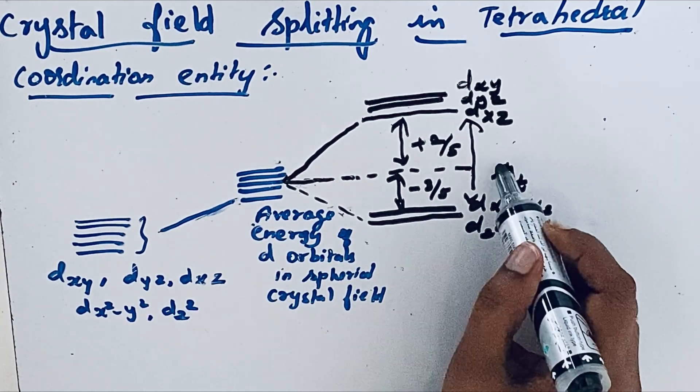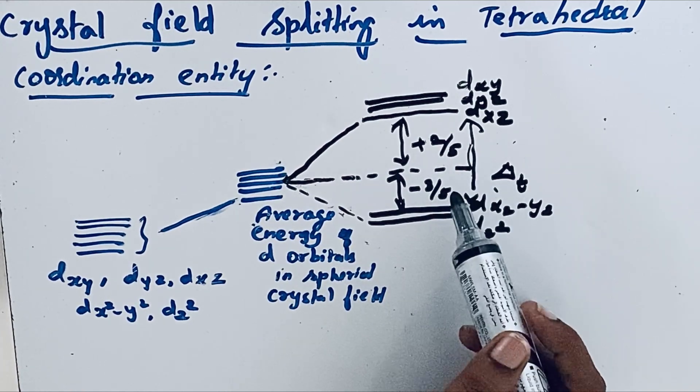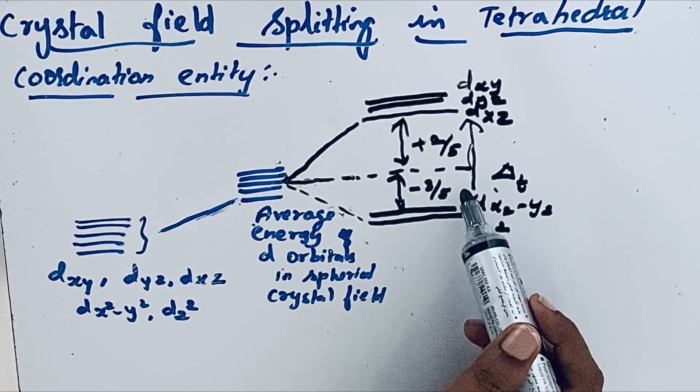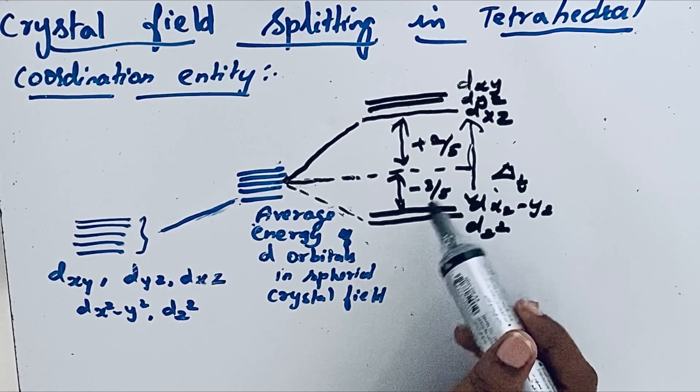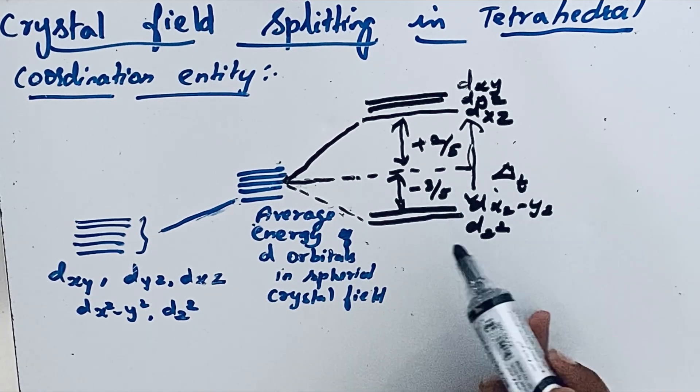This energy is very low when compared to octahedral coordination entity. So that is why low spin configurations, that means low spin tetrahedral coordination entity, is very rarely observed.